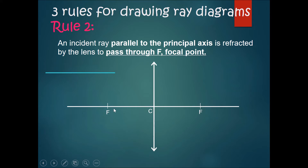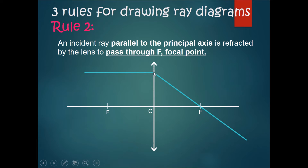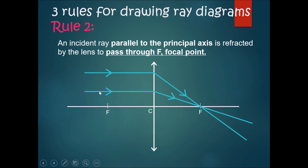The second rule is that any incident ray that is parallel to the principal axis will be refracted by the lens and will pass through F, the focal point, no matter at what point of the lens it enters. If the light ray comes in parallel and hits the lens here it bends and passes through the focal point. There is less of a bend higher up and more of a bend lower down.